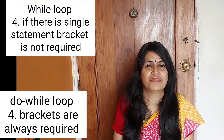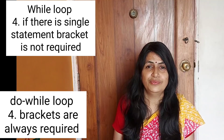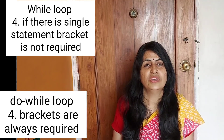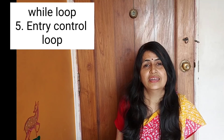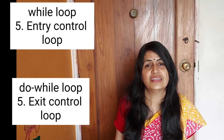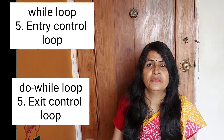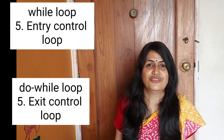Another point is: while loop is called an entry control loop because the condition is at the first of the loop. And do while loop is called an exit control loop because the condition is at the bottom of the loop.